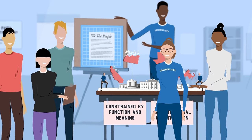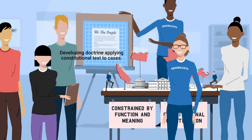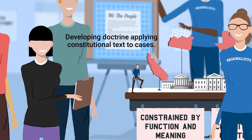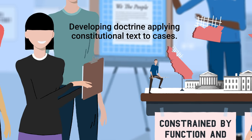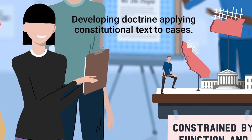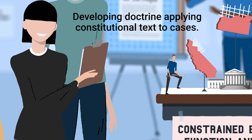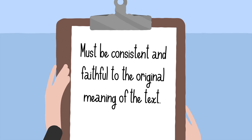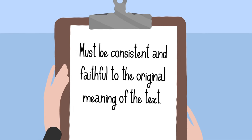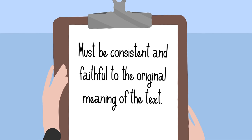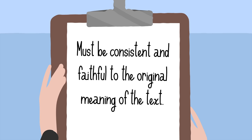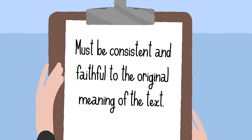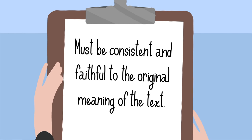But the doctrines that are developed to implement the original meaning of the Constitution must not only be consistent with the original meaning of the text — they must be faithful to the original meaning of the text, meaning faithful to the reasons why the text was written the way it was written.